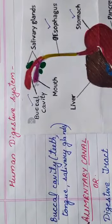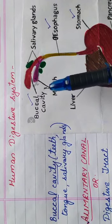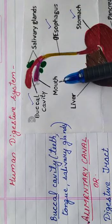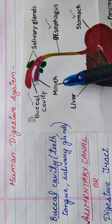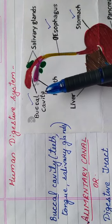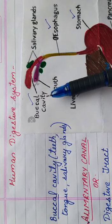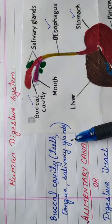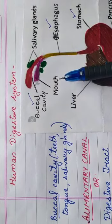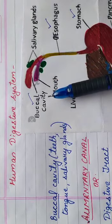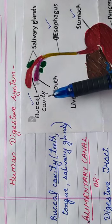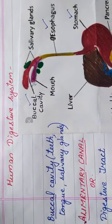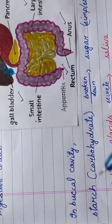Here you must have noticed a new term: the buccal cavity. What is the difference between the buccal cavity and the mouth? The mouth is simply the opening where you put the food. But when the food moves inside, that portion is called the buccal cavity. The buccal cavity includes your teeth, the tongue, and the salivary glands.